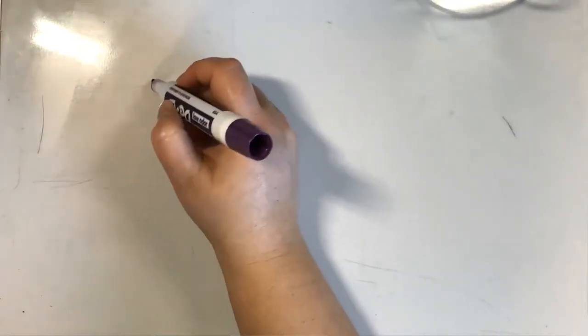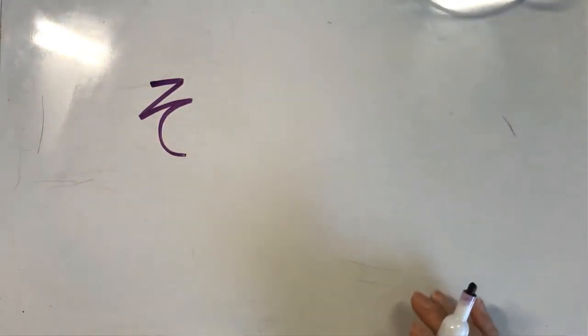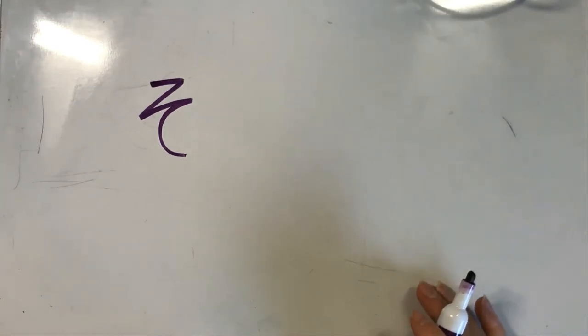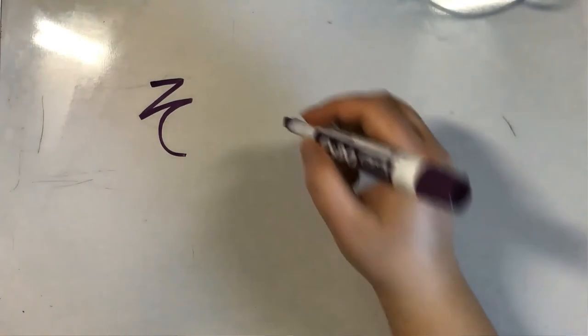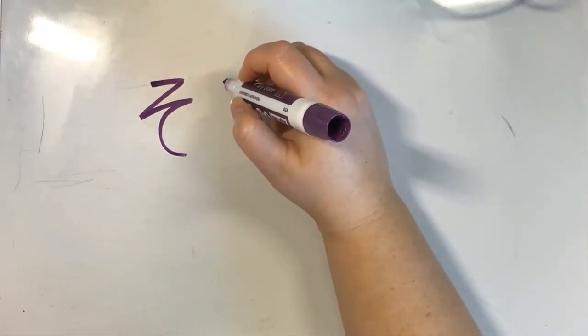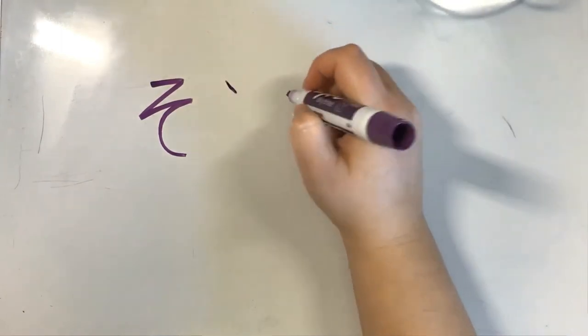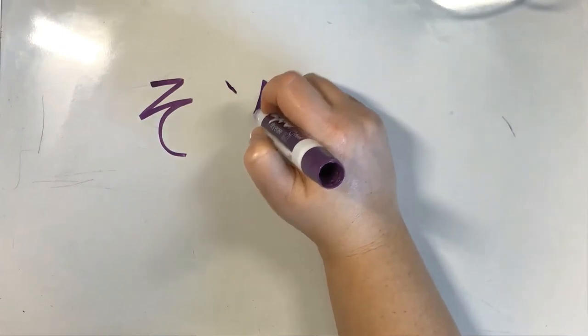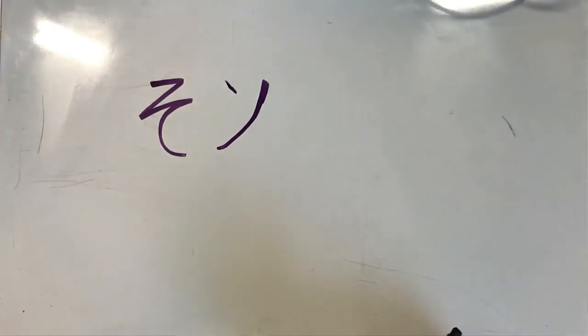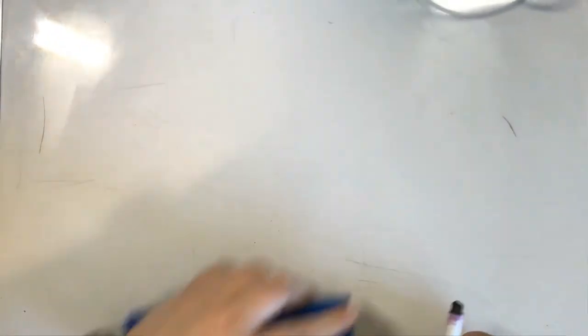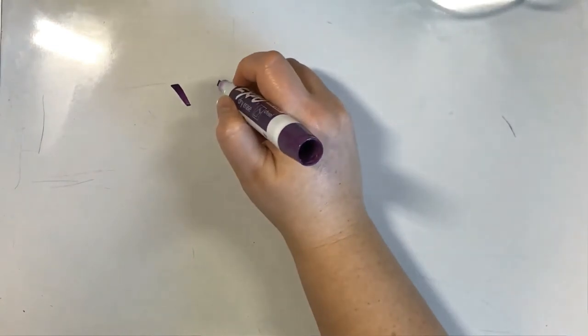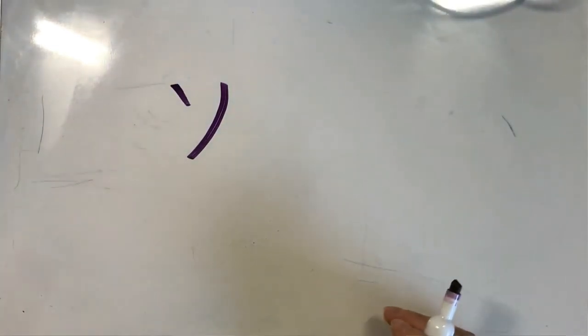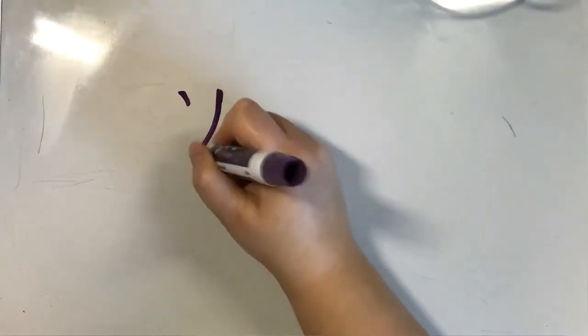The last one we're learning today is 'so'. In hiragana, so kind of reminds me of a quarter rest in music. The katakana so is completely different — you start with a small tick on the left corner, then another one from the right side, and a line going down. They look absolutely nothing the same. So: small tick, long line. That is 'so'.